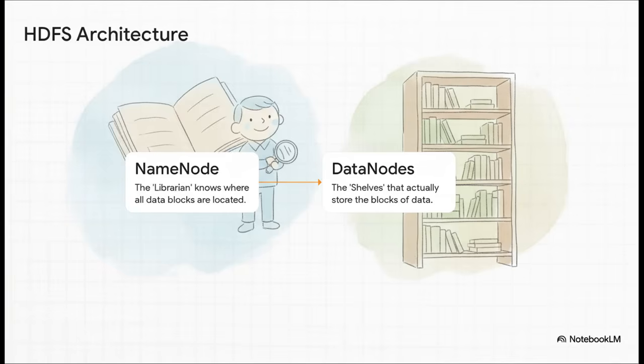The classic example here is HDFS, the Hadoop Distributed File System. The best way to think about it is like a huge library. You've got one master librarian—that's the name node. The librarian doesn't hold any of the books, but it has a perfect catalog that knows exactly where every single book is. Then you have thousands of shelves—the data nodes. These actually store the books, or in our case, the chunks of data. It's a simple idea, but incredibly powerful and scalable.